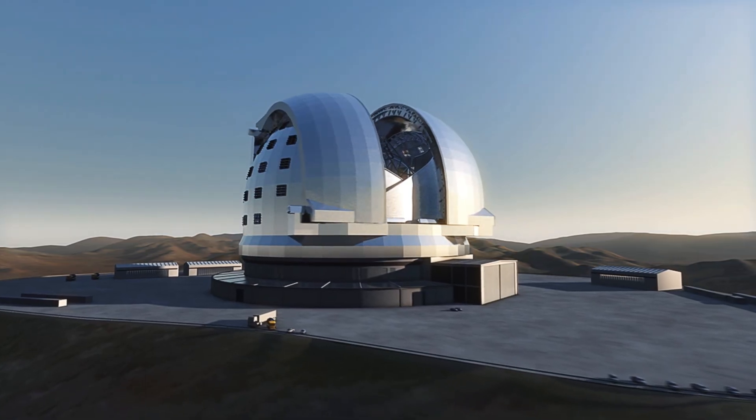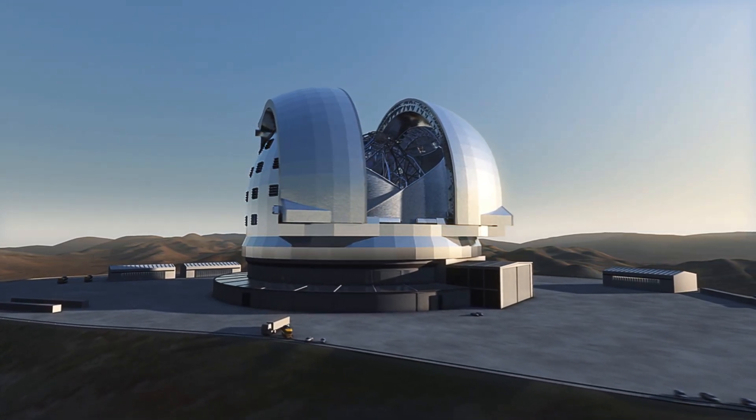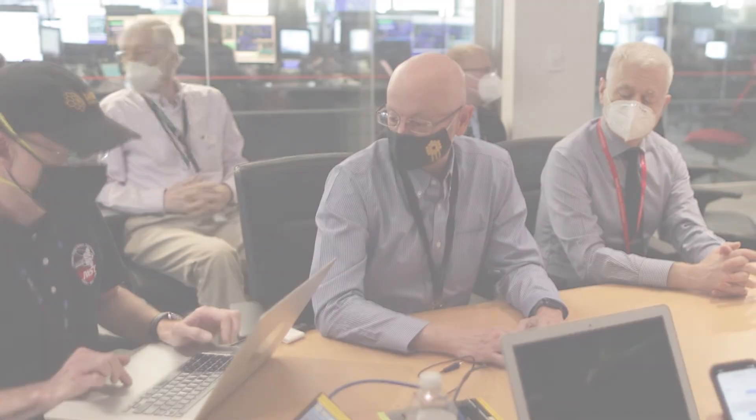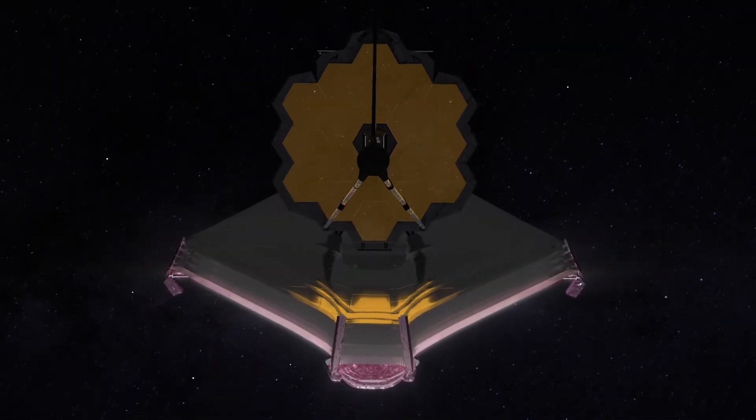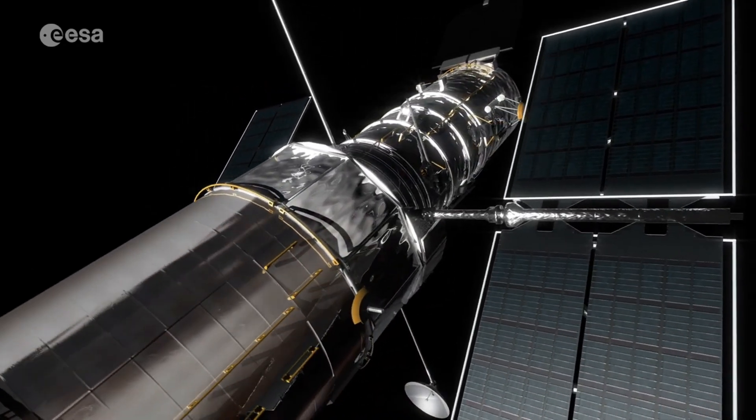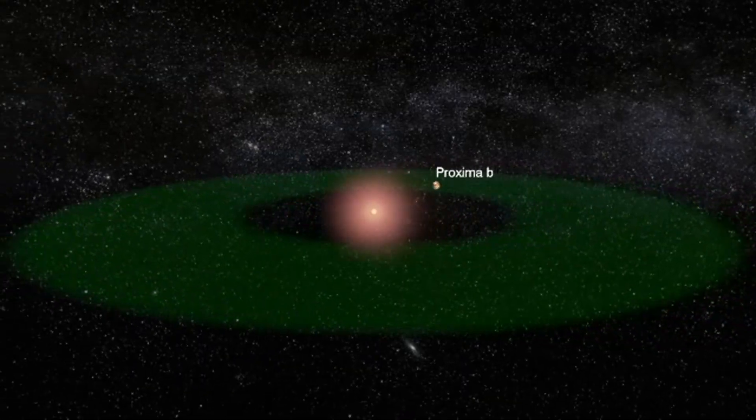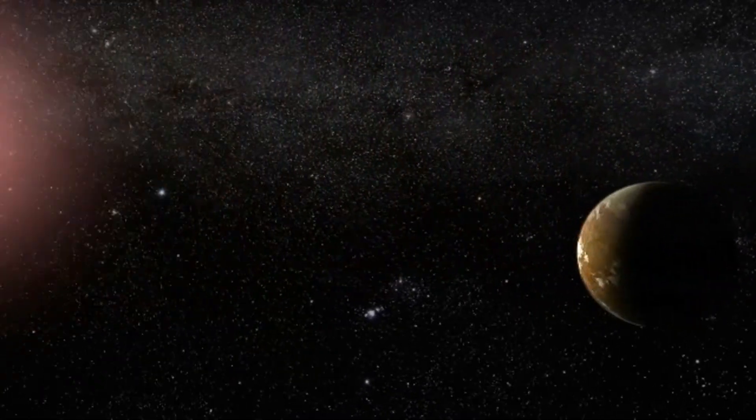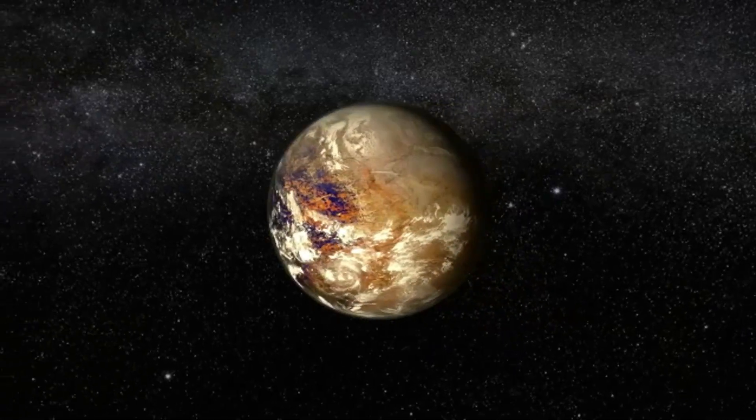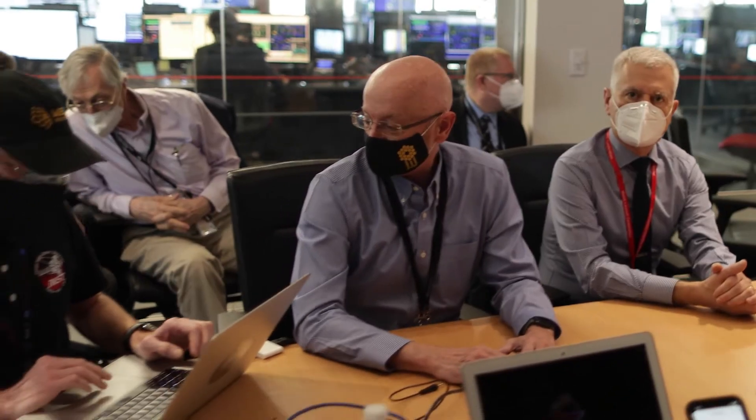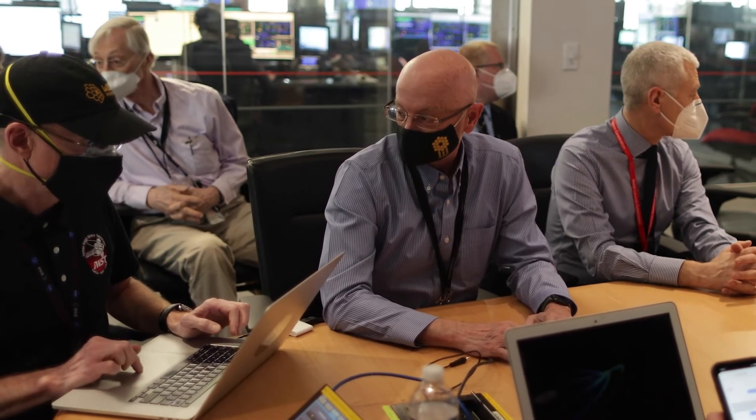These flares can bombard the planet with harmful radiation, making it hard to imagine life surviving there. But if these lights are anything to go by, it suggests that the inhabitants of Proxima b have found some way to protect themselves. Maybe they have developed advanced technology to control their atmosphere or shield their cities from radiation. Heck, they might have even adapted biologically or technologically to thrive under such extreme conditions.